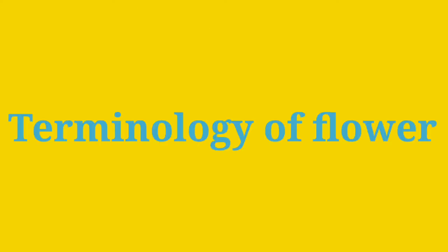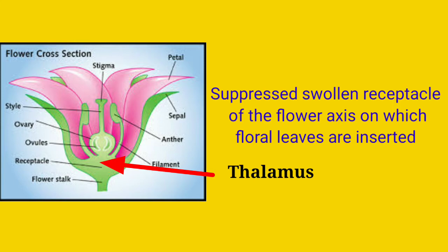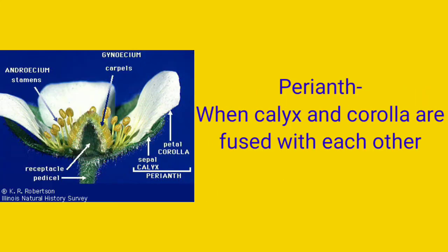Now let's come to the different terminologies related to a flower. The first terminology is thalamus — it is the suppressed, swollen receptacle of the flower axis on which the floral leaves are inserted. The second terminology is perianth: when calyx and corolla are not distinct or are fused, it is called a perianth — for example, in the banana flower.